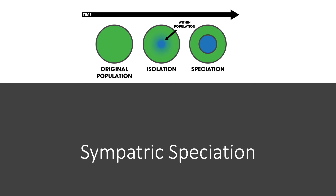With time, they have isolated themselves, so sympatric speciation has occurred because the interactions between these two groups are now so limited based on their feeding patterns that they no longer mate with each other. Now you have two separate species within the same region.